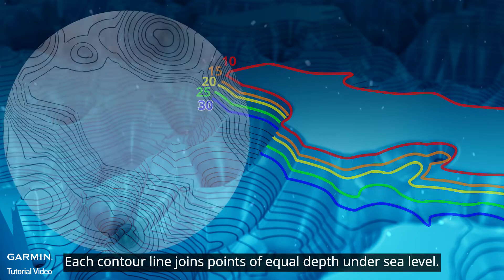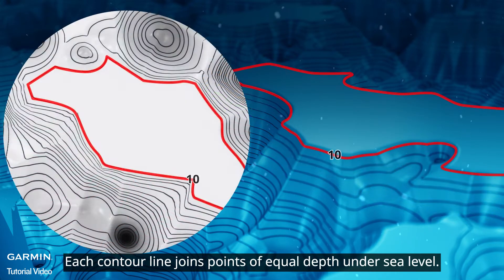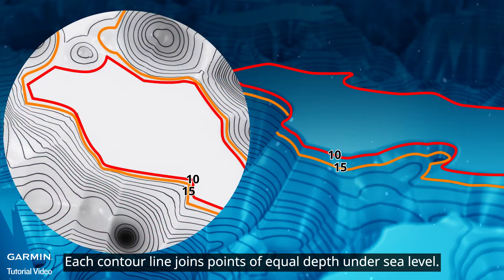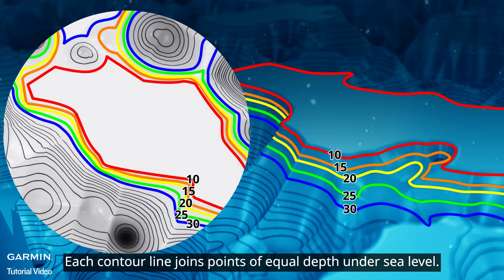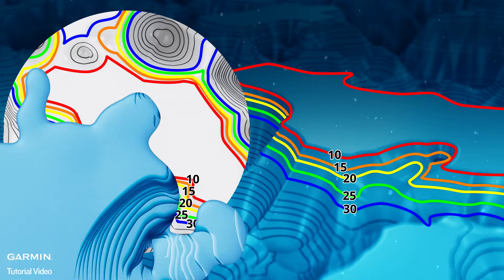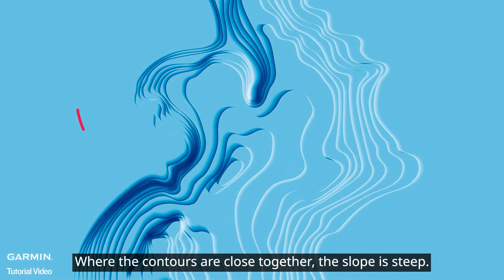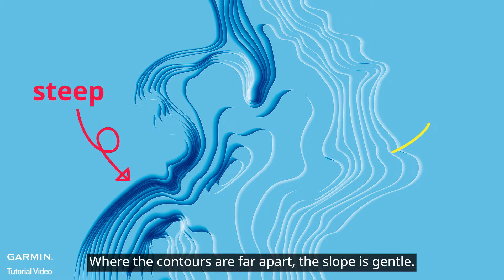Each contour line joins points of equal depth under sea level. Where the contours are close together, the slope is steep. Where the contours are far apart, the slope is gentle.